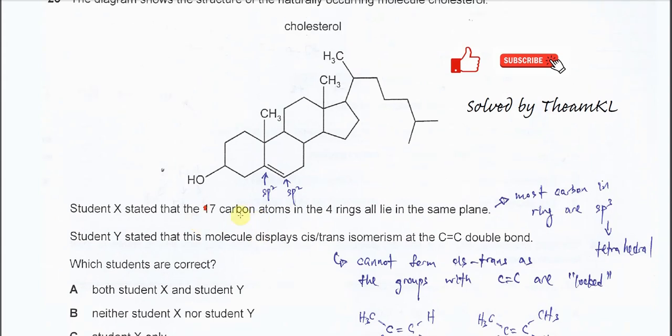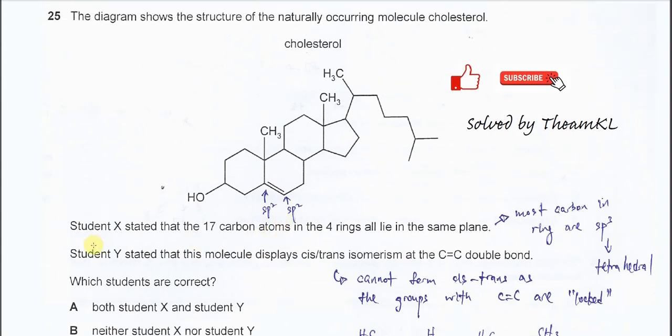So first, let's look at Student X. This student stated all these carbons in the ring are in the same plane. So this one obviously is wrong. Why? In this diagram, it looks like they're in the same plane but they're not.